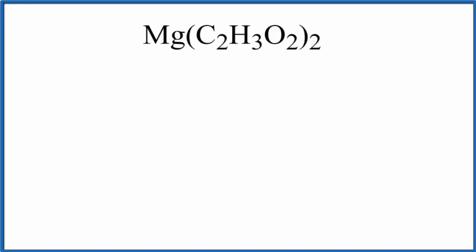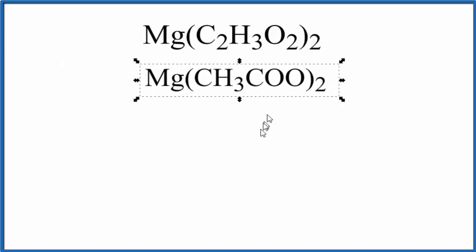You'll also see magnesium acetate written like this here. Although it looks quite different, it's the exact same thing. We have two carbons here, we have one, two carbons here, three hydrogens, two oxygens here, and two oxygens here. These are just two different ways to write it. Let's work with this one in this video.